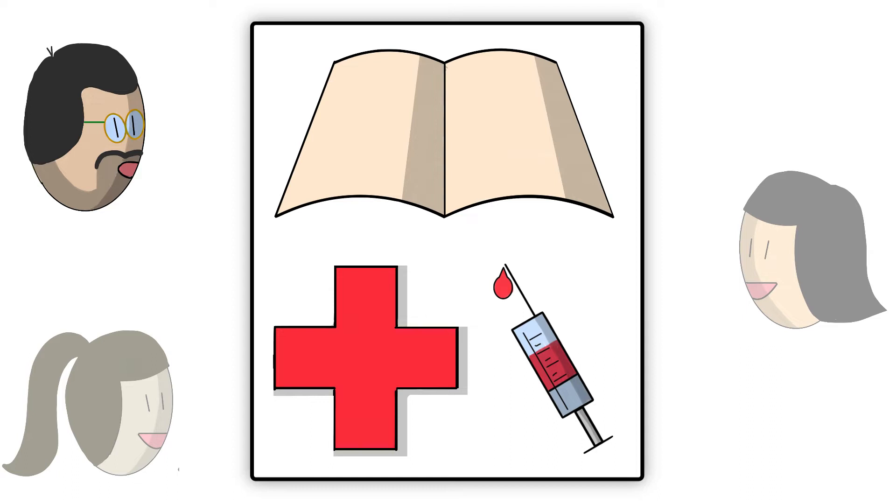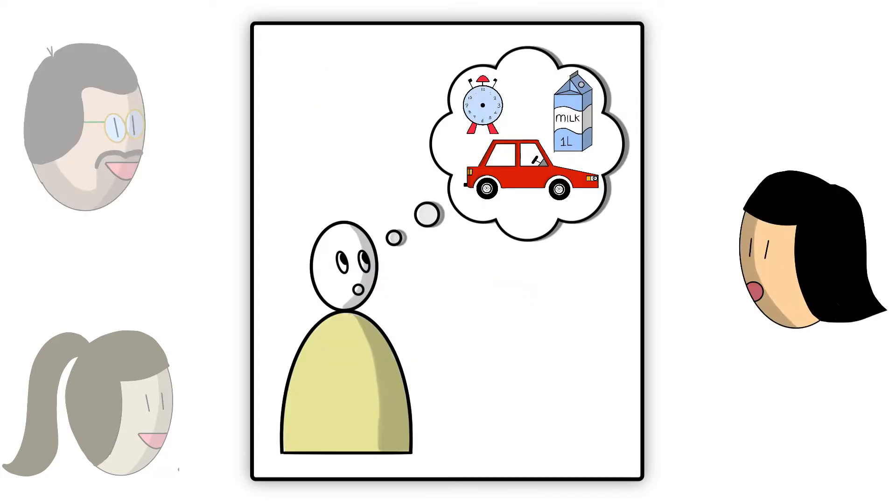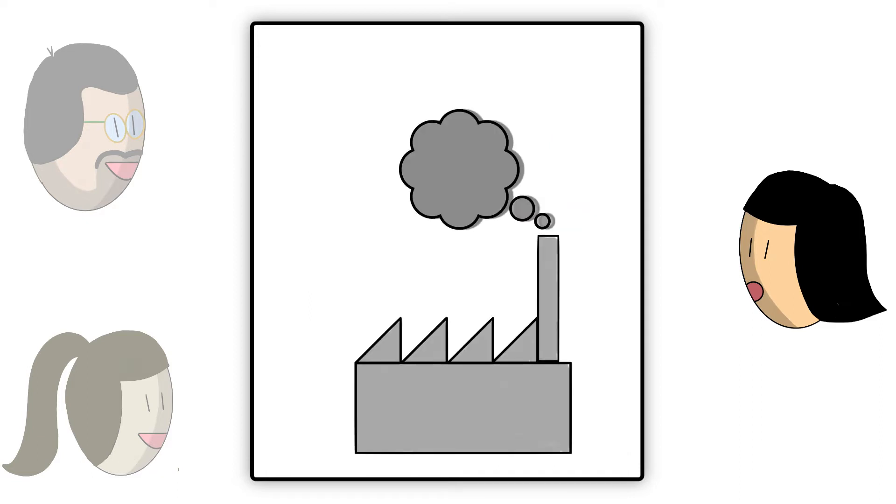Our daily needs such as education and healthcare are fulfilled in the community. Also, to satisfy our needs we need to produce goods and this is called production of goods.